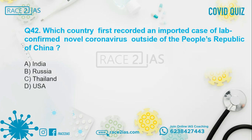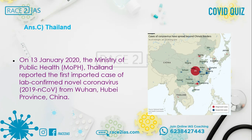Question number 42: Which country first recorded an imported case of lab-confirmed novel coronavirus outside of the People's Republic of China? Option A: India. Option B: Russia. Option C: Thailand. Option D: USA. The right answer is Option C, Thailand. On 13th January 2020, the Ministry of Public Health of Thailand reported the first imported case of lab-confirmed novel coronavirus from Wuhan, Hubei Province, China.